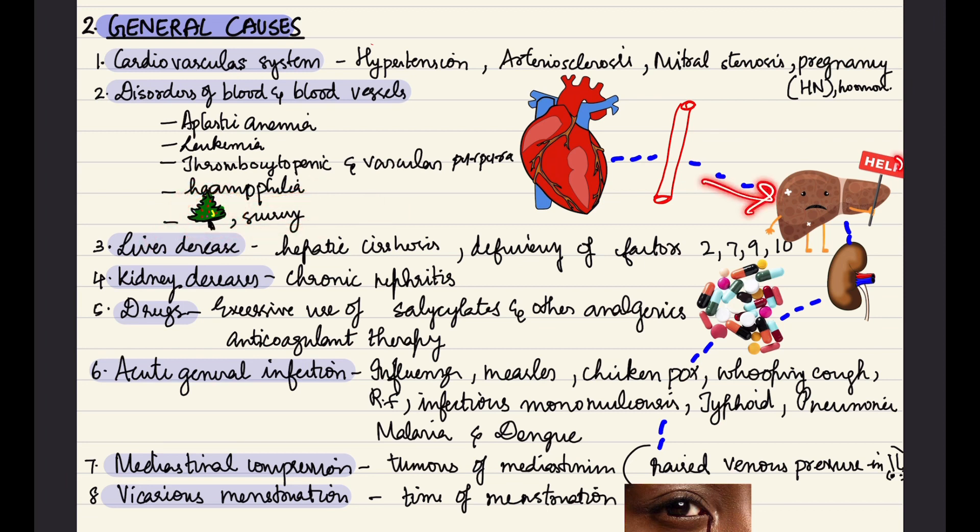We have liver-related diseases such as hepatic cirrhosis and deficiency of factors 2, 7, 9, and 10. We have kidney-related disease such as chronic nephritis and excessive use of drugs such as salicylates, analgesics, and anticoagulant therapy.